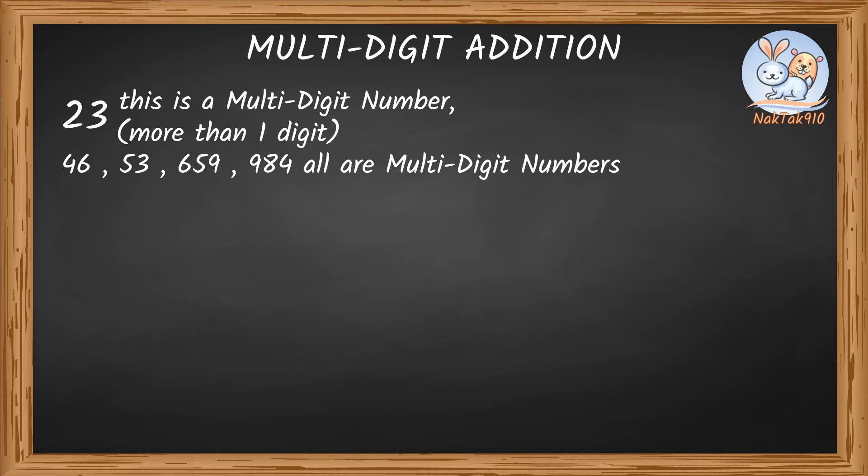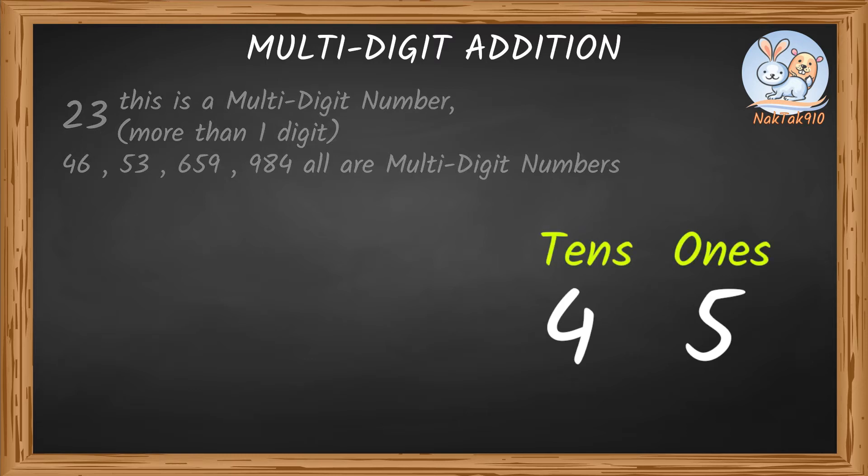A two-digit number uses two number places with one digit in the ones place and another in the tens place. Another example is 45. 45 is a two-digit number with five in the ones place and four in the tens place.